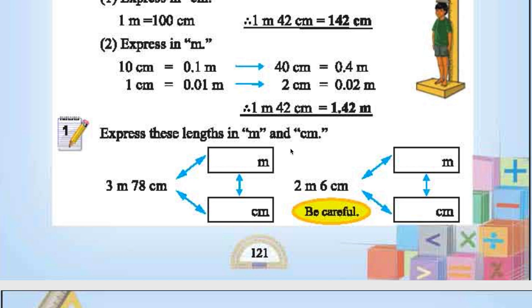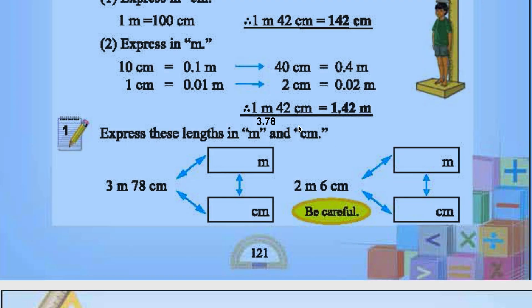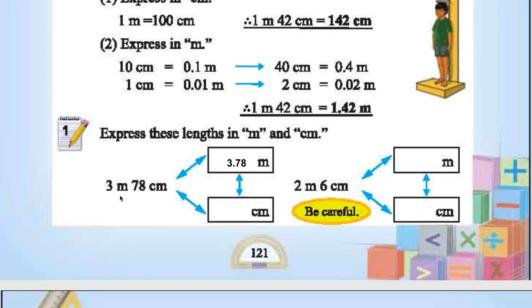Express these lengths in meters and centimeters. 3 meters 78 centimeters. In meters it is 3.78. 78 by 100 is 0.78. 3 plus 0.78 is 3.78 meters. In centimeters, 1 meter is 100 centimeters, so 300 plus 78 is 378 centimeters.